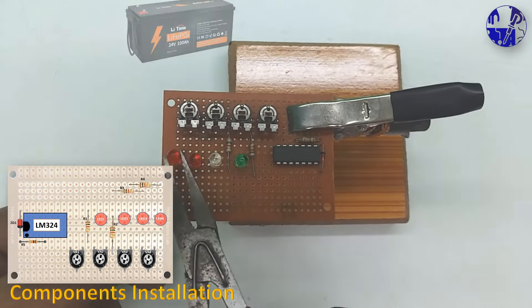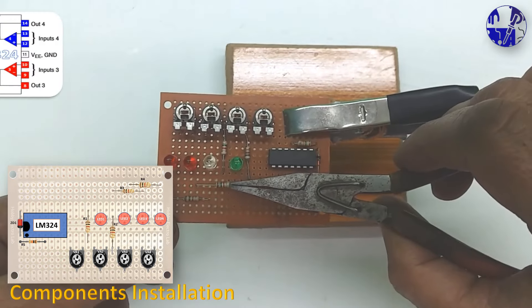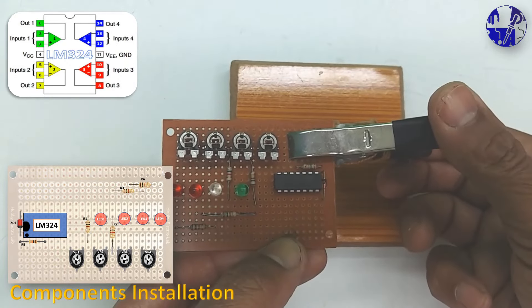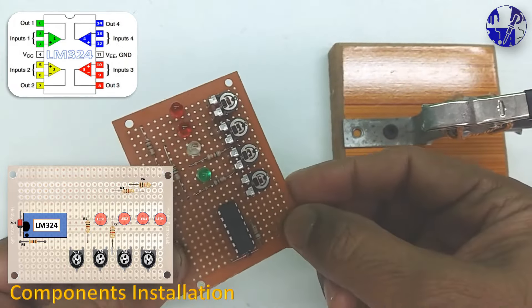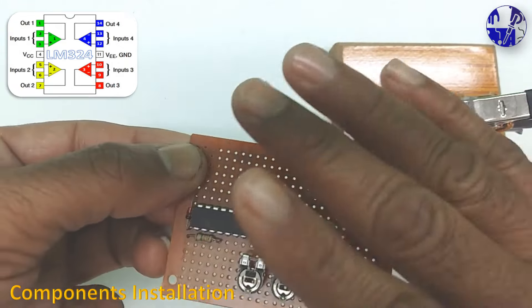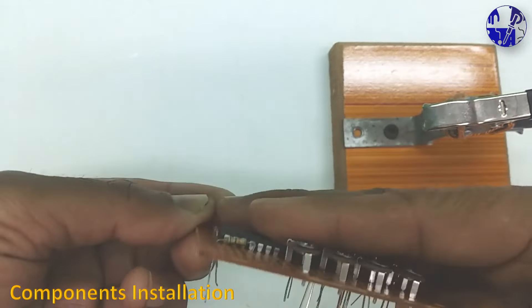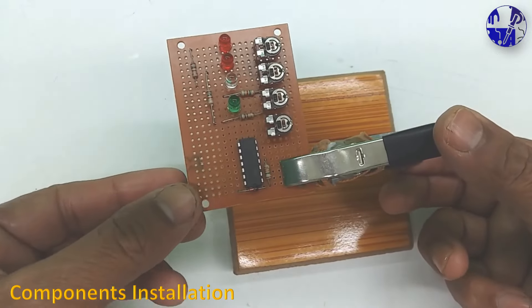The LM324, a quad-channel operational amplifier, serves as an excellent choice for battery voltage level indicators, ensuring precise and reliable monitoring. Constructing projects like these is ideal for educational purposes.